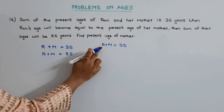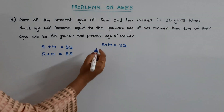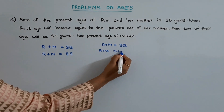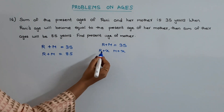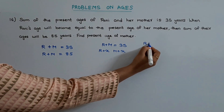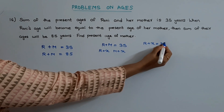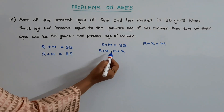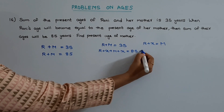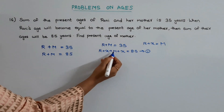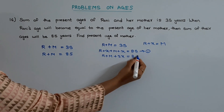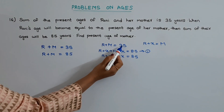The sum of the present ages of Rani and mother is given as 35 years. Let us assume that x years later Rani's age becomes equal to that of the present age of her mother. So x years later Rani's age will be r plus x, and mother's age after x years will be m plus x. This r plus x equals the present age of mother, that is m. The summation of their ages after x years is 85, so this equation can be written as r plus m plus 2x equals 85.